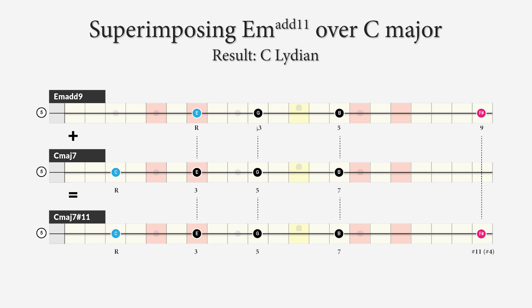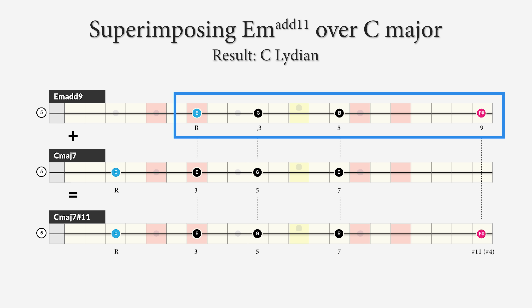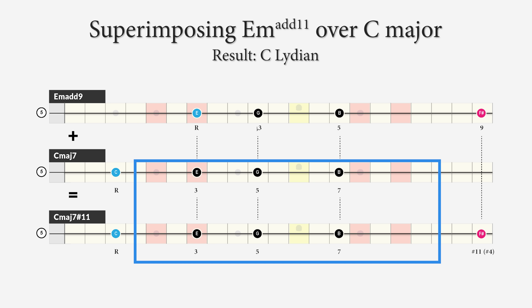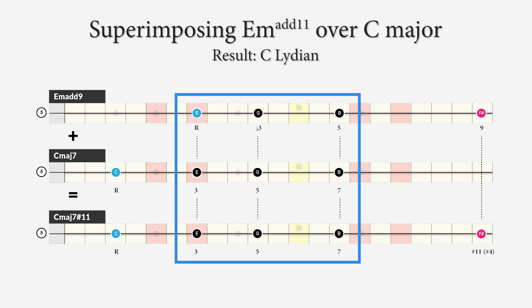We can also superimpose an E minor add 9 arpeggio consisting of the notes E, G, B, and F sharp over the C major 7th chord to create a C Lydian sound. The notes E, G, and B are already part of the C major 7th chord, but F sharp is the Lydian augmented 4th degree in the C Lydian scale. In this example it resolves to an A minor 7th chord, and in this respect the F sharp could also imply an A Dorian mode — an A minor scale with a major 6th degree F sharp.